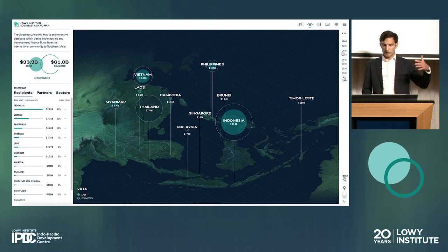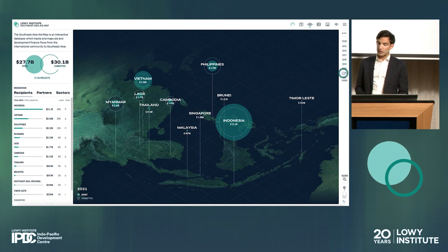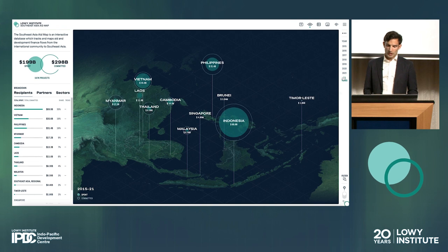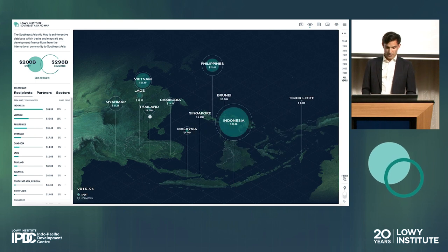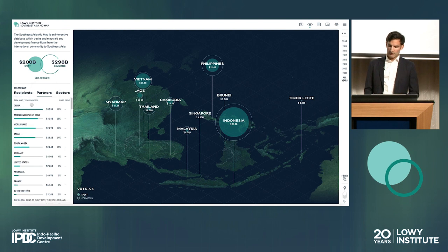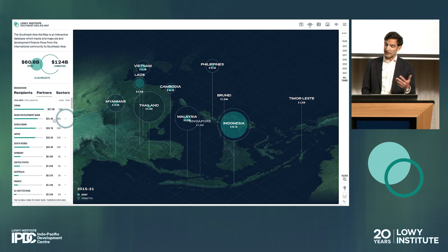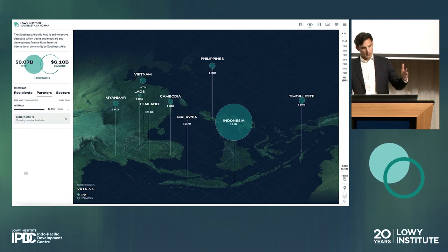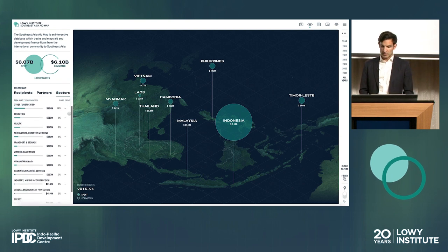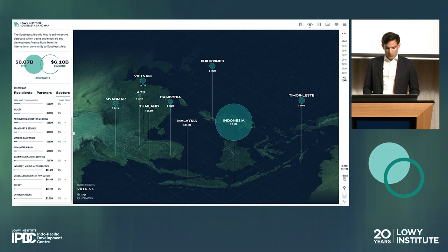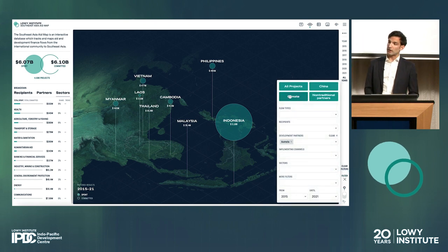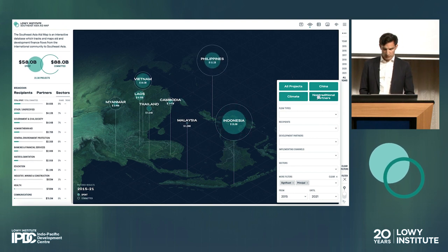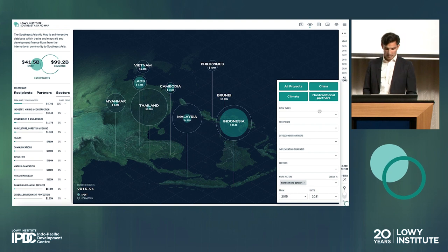We collected data covering the period from 2015 to 2021, which represents the most recent years for which we have complete information. By default, the landing page displays aggregate figures for all years expressed in constant US dollars. On the left panel, you'll find the ranking of development partners in the region. By selecting any of the 97 different partners, you can access specific financing details in Southeast Asia. After selecting a specific partner, you can explore the distribution of development finance across various sectors. We've also implemented a filter section with pre-selected filters — for instance, looking at climate development finance or the footprint of non-traditional development partners.